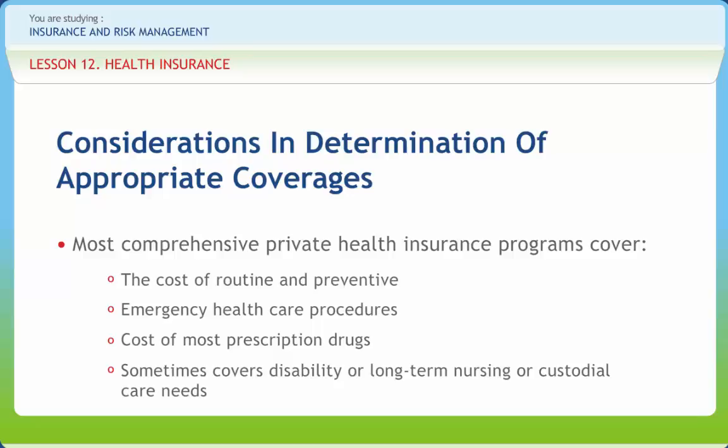The covered groups or individuals pay premiums for protection from high or unexpected health care expenses. Comprehensive private health insurance must be based on estimation of the overall risk of health care expenses, developing a routine finance structure such as a monthly premium or annual amount. Money is available for reimbursement to pay for the health care benefits specified in the insurance agreement. Policies may be administered by a central organization, government agency, or a private or not-for-profit entity operating a health plan.